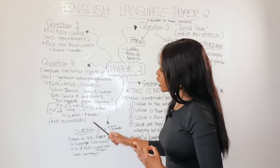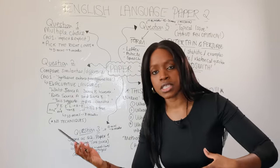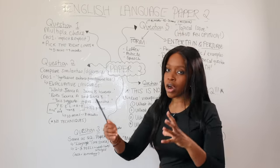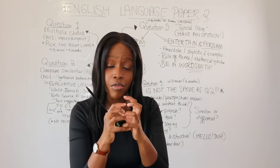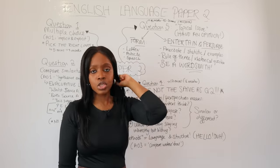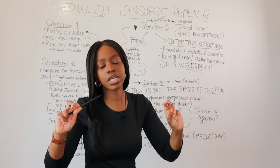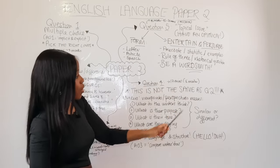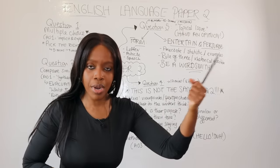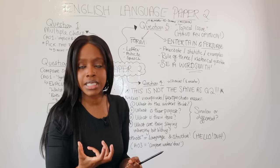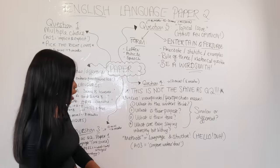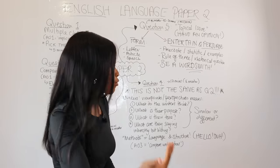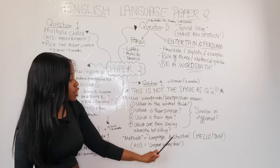If you're able to think about the connotations — what's just beneath the surface for both source A and source B — that's really powerful. The question will either say focus on a similarity or a difference, meaning you use the evaluative language accordingly. You also need to use PEEL paragraph structure combining both sources in the same paragraph. Importantly, in this question you also need to think about the writer's methods — the bullet points always ask you to think about language and structure when discussing viewpoints and perspectives.